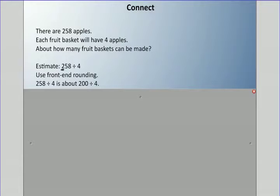We're going to estimate 258 divided by 4, and that will tell us how many baskets can be made. With front-end rounding, we look at the first digit and we can change it to 200. So we could do 200 divided by 4.